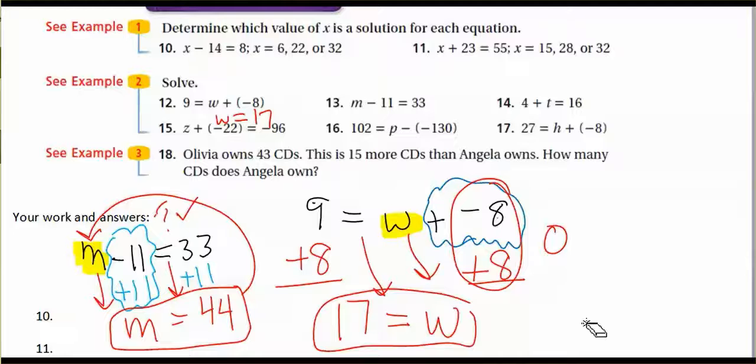Let's see. Let's look at number 14. So again, the first step is to identify the variable, figure out what are we trying to solve for. That is our T. And then you ask yourself what is being done to that variable that's keeping it from being by itself. And in this case, we have 4 being added to it.